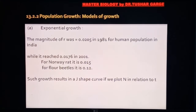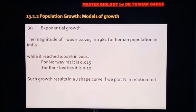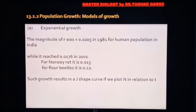For example, for the Indian human population in 1981, the r value was 0.0205; by 2001 this figure had come down to 0.0176. Other examples from NCERT: for the Norway rat, r = 0.015, and for flour beetles, r = 0.12.